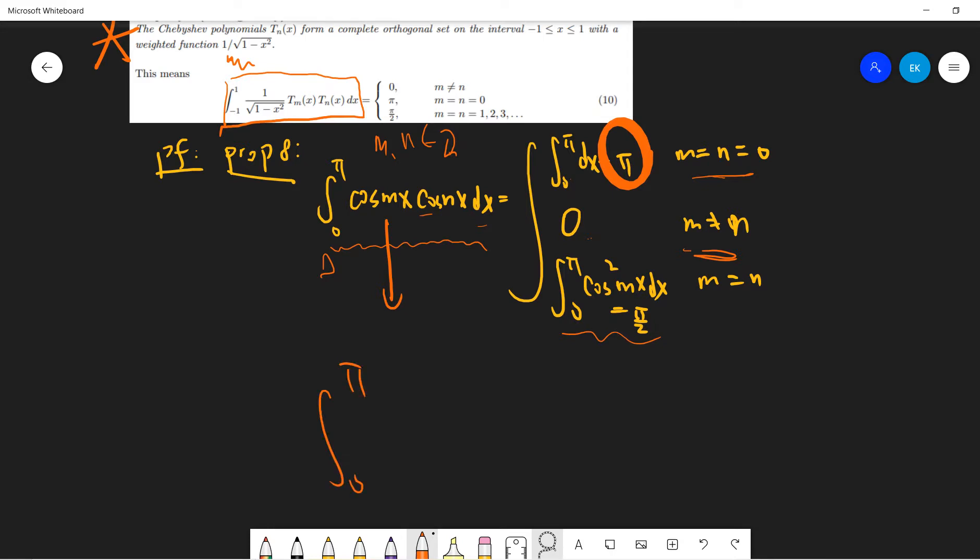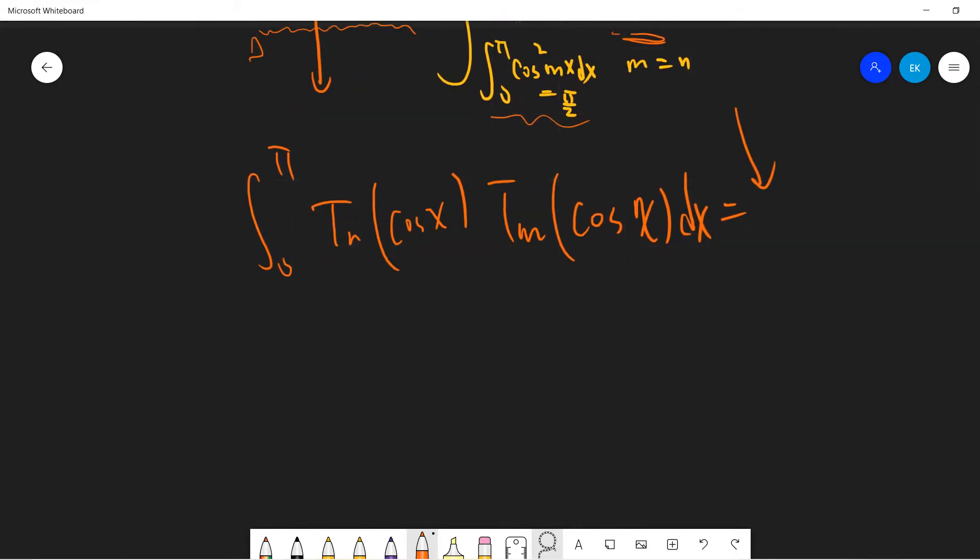so for example, this is t. So this is Tn cosine x, Tm cosine x, dx. Equals to the answer. So let's finally do the simple change of variable. Let's say cosine x equals x bar. So it's Tn x bar, Tm x bar. Let's solve this. Let me just delete this dual triangle.